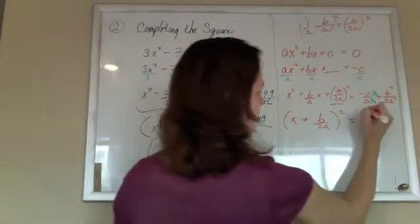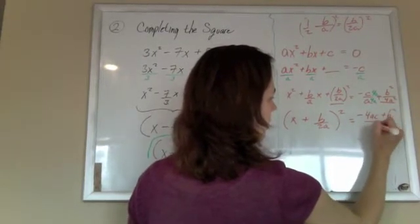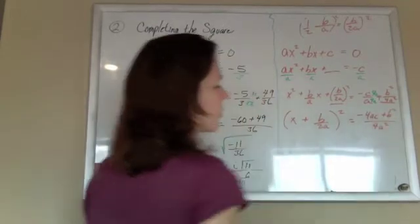And so now I've got negative 4ac plus b squared, all over that common denominator, 4a squared.